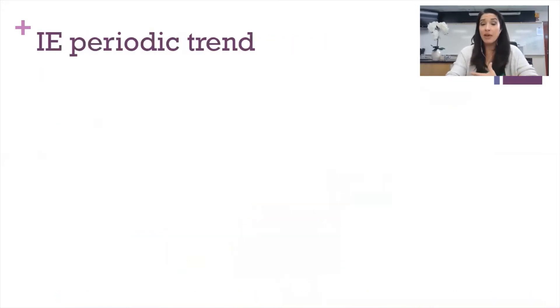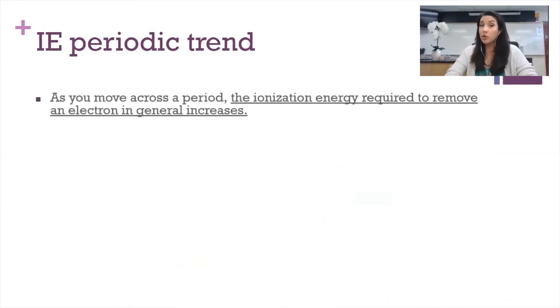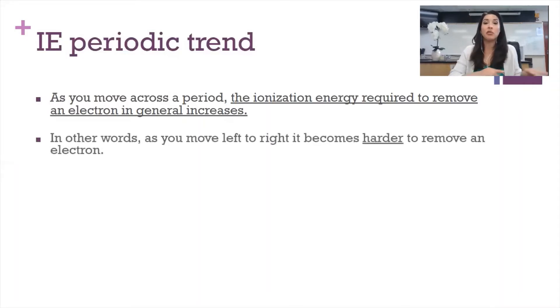The trend of ionization energy in terms of the periodic table, in general, as you move across the period on the periodic table, the ionization energy required to remove an electron generally increases. And it gets a little funky with the transition metals, but in general, the ionization energy increases. It becomes harder and harder to remove an electron as it gets closer and closer to that stable octet. In other words, as you move from left to right, it's harder to remove an electron.